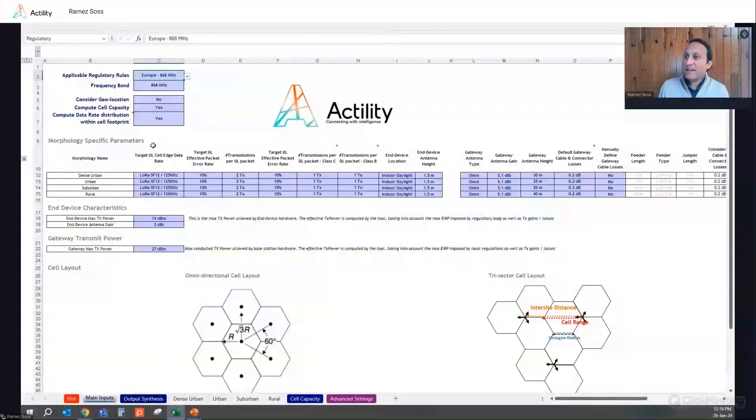Let me quickly show you how this tool looks like. So here is the ThinkPark air interface dimensioning tool. It's an Excel-based tool. You can see here one sheet to set all your main inputs, which are all marked in blue. And you can see among the inputs, you can set the regulatory rules together with the frequency band for your deployment. And you can set for each morphology, starting from dense urban, urban, suburban, down to rural, you can set some design parameters, like what is your target uplink spreading factor at cell edge, what is the target maximum packet error rate, the number of transmissions for each uplink packets, and the same thing for downlink. And you can also set your end device location between outdoor, indoor daylight, deep indoor, or basement. And you have some other metrics and some inputs that you can set here.